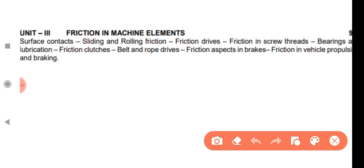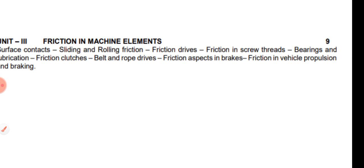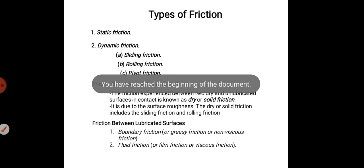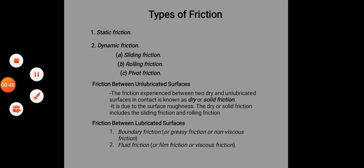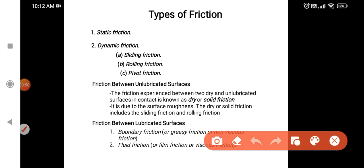If we ask questions about friction and belt and rope, we will discuss the next lecture. The next lecture will be important. We will discuss the second lecture — the basics of friction. The types of friction: we will divide into two categories. First, Static Friction and Dynamic Friction.